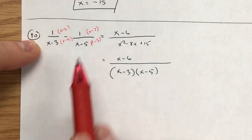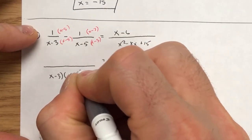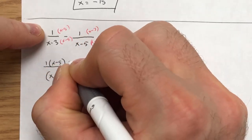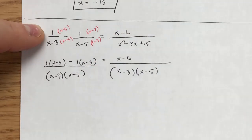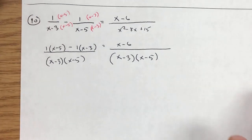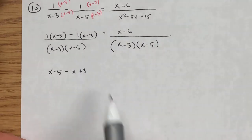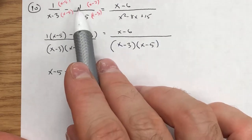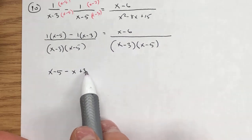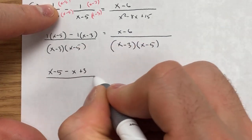Now both fractions share the same denominator of (x - 3)(x - 5). Distributing the tops gives 1·(x - 5) minus 1·(x - 3). I'm showing the half-step here because with that negative 1, if I distribute without writing it out, I might end up with -x - 3 instead of -x + 3, and I'd miss the full value of that negative sign.